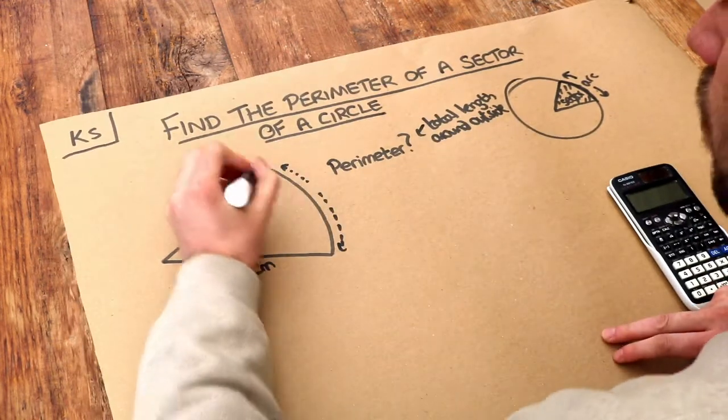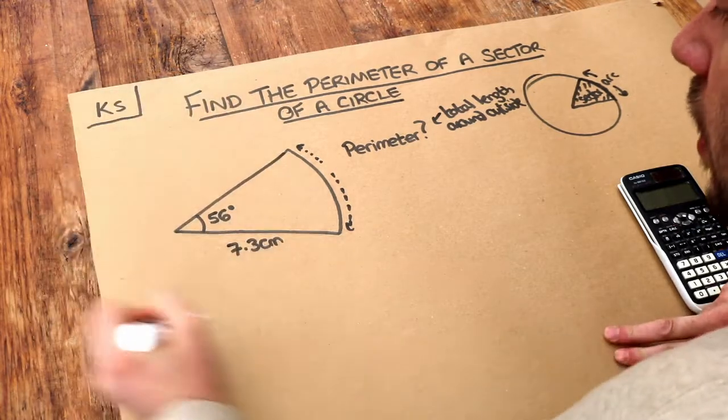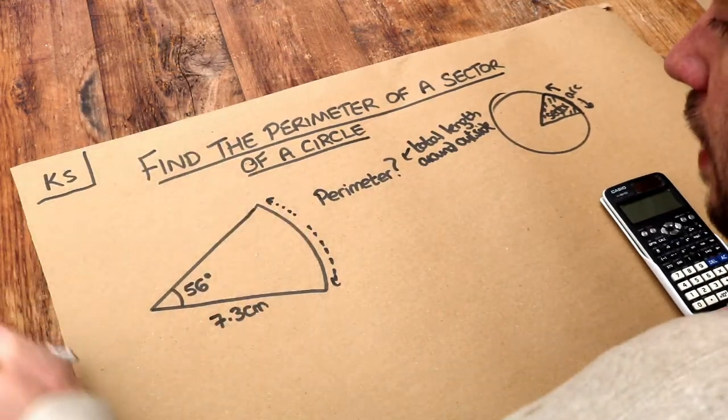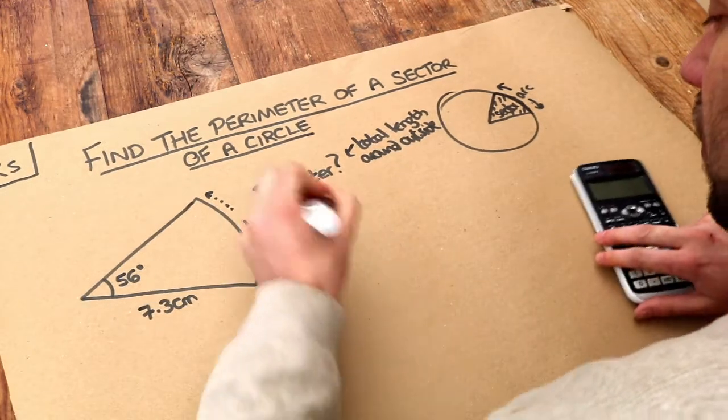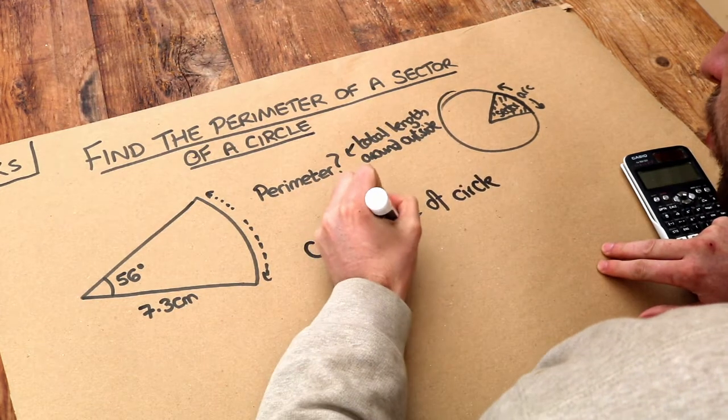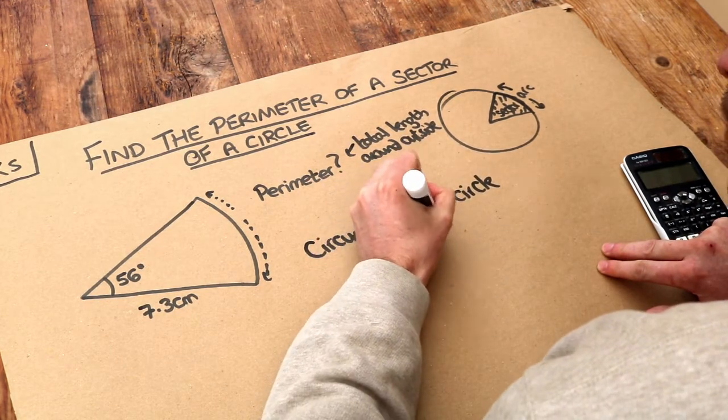Well let's think, if we were to continue the circle on to make a full circle, what would be that total circumference, that total length of the circle? Well the circumference of a circle, we've previously seen, is 2 times pi times the radius.